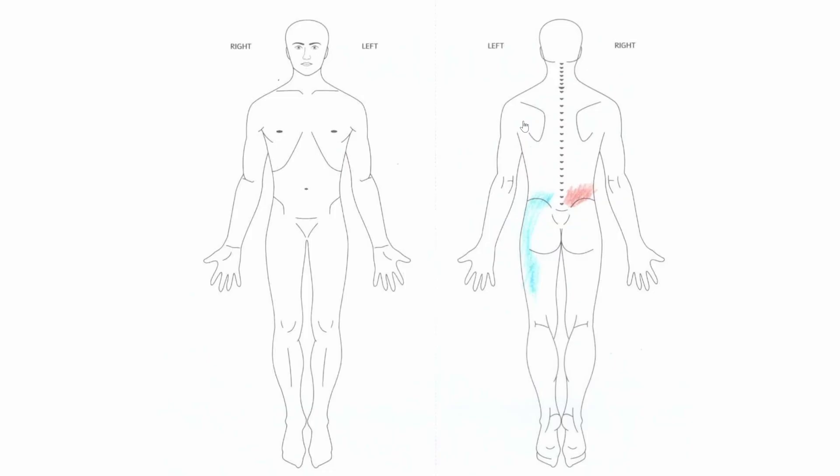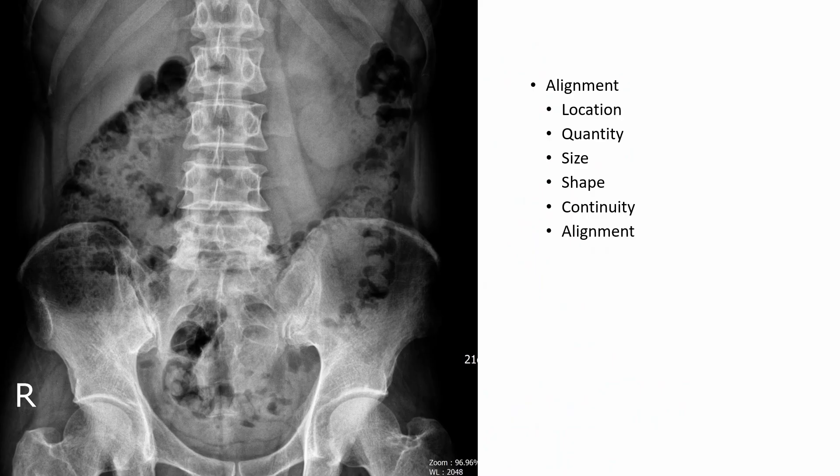Now, let's have a glimpse at the patient's background. For a detailed history, make sure you delve into the provided case study. We're looking at a 45-year-old male who experiences tingling sensations, which trace from his left gluteal region to the back of his thigh, coupled with pain in his right lower back.